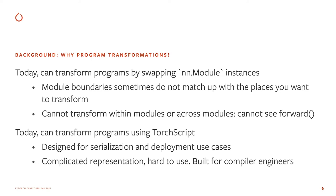So how can you do such transformations in PyTorch today? One option is to swap modules in the NN module hierarchy built into PyTorch. This works in many cases, but sometimes the module boundaries do not line up with the places you want to transform. In addition, you cannot transform code within the forward method with this technique, including calls to PyTorch operators, which are functions rather than modules.